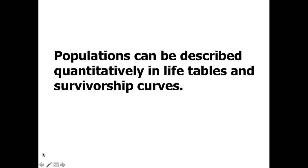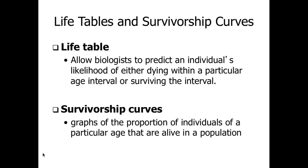In this third part of population ecology, we're going to look at another mathematical representation of how populations can be described: survivorship curves. These show graphic representations of what percentage or portion of a population you would expect to be alive at each given age. They enable biologists, ecologists, or sometimes insurance agents to predict the likelihood of whether somebody is going to live or die at a given age. Life tables are especially used in economic settings, such as with insurance companies.